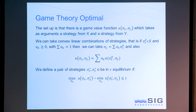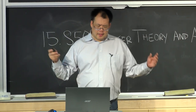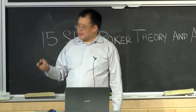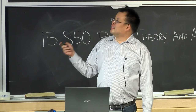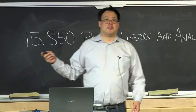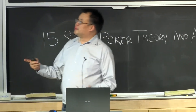We define a pair of strategies to be an epsilon equilibrium if the best x can do against y's strategy minus the best y can do against x's strategy is less than or equal to epsilon. If epsilon equals zero, the two strategies are in Nash equilibrium. After 900 CPU years, what they found were two strategies — sigma x* and sigma y* — that were within one-thousandth of a big blind of equilibrium. That's basically their accomplishment.